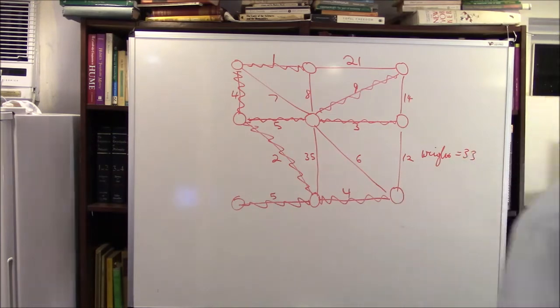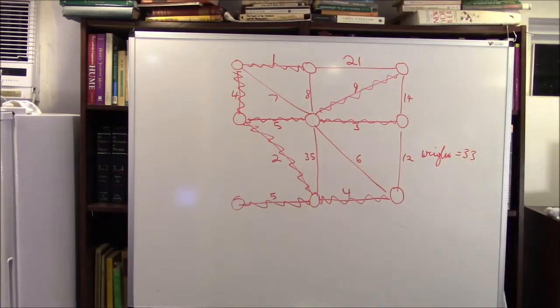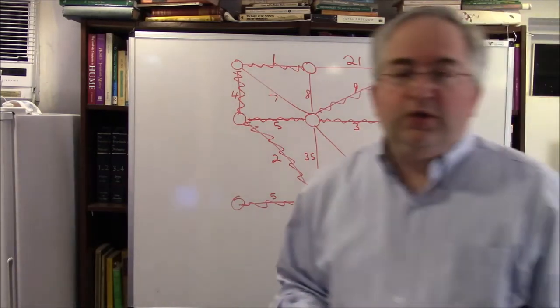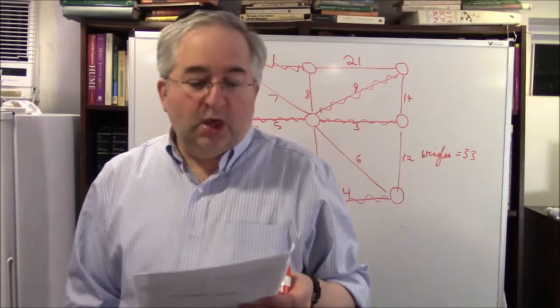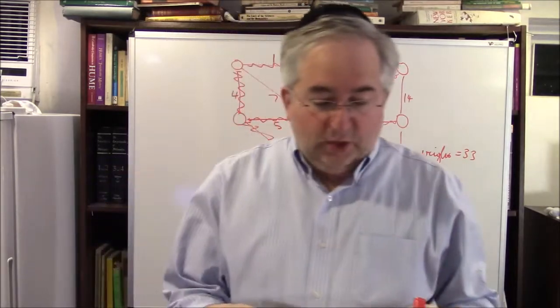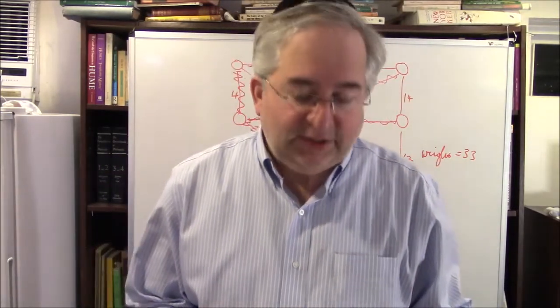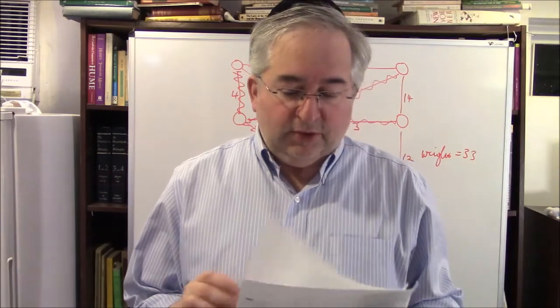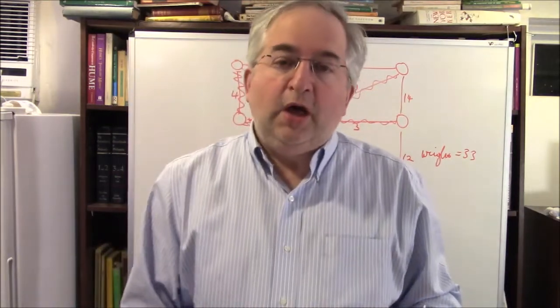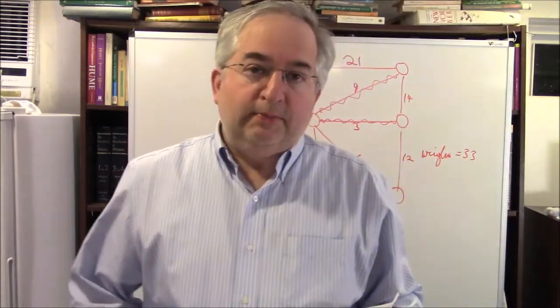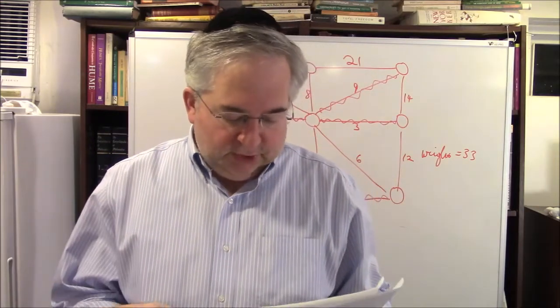Section 23.2 has two algorithms. One is called Kruskal's algorithm — you'll like that a lot — and one is called Prim's algorithm. They give you two ways of finding the tree. Prim's you will not like so much.